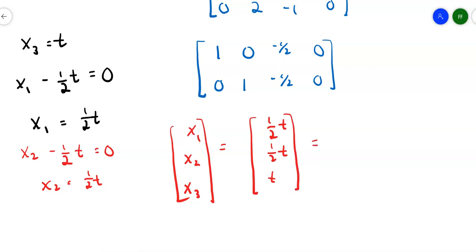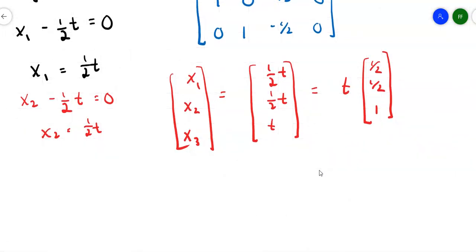I can pull the t outside and write the solution as t times [½; ½; 1], where t is any real number. Or, if you don't like dealing with fractions, write it as t times [1; 1; 2], because all I'm finding is the relationship between the numbers. The first two variables have the same value and the third is double that. You could even multiply through by negatives and write [-2; -2; -4]. I'm just coming up with a set of parameters that explains how the variables are related.